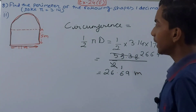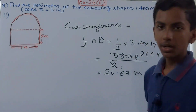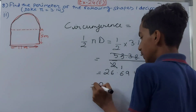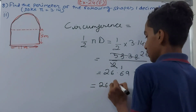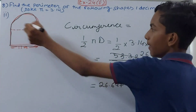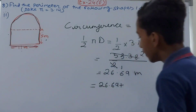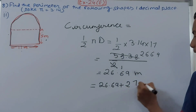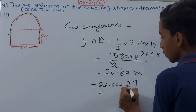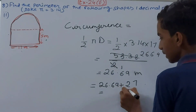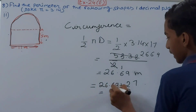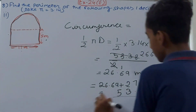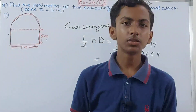Now add all the sides for the full perimeter: 26.69 plus the rectangle sides gives 53.69 meters. That is the perimeter of the second combined shape.